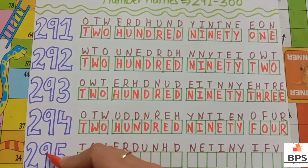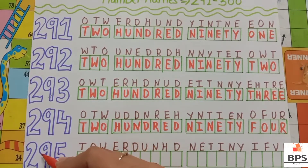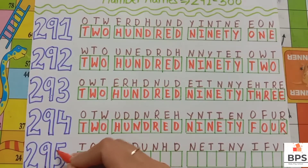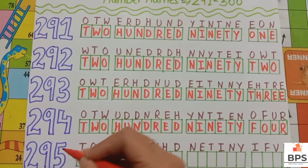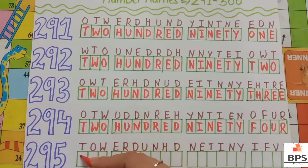Two hundred ninety four. Two nine five. Two hundred ninety five.